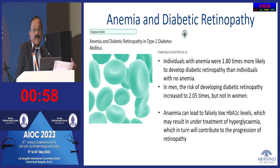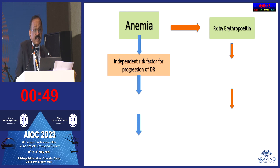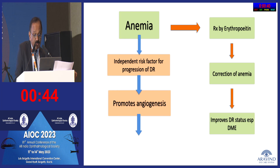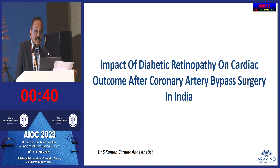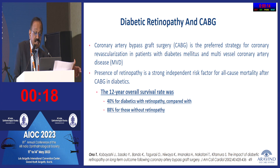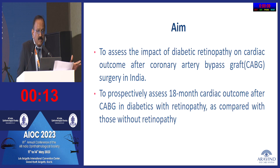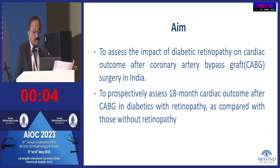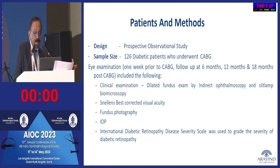Anemia is an independent risk factor for diabetic retinopathy, and correcting it can improve DR status. Regarding cardiac outcomes, the overall presence of retinopathy is a strong risk factor for all-cause mortality in patients undergoing coronary artery bypass grafting (CABG). The 12-year overall survival rate is only 40% in diabetics with retinopathy versus 80% in those without. Our study at Aravind assessed 126 patients and found non-fatal MI or congestive heart failure was much higher in those with baseline retinopathy at the time of CABG.